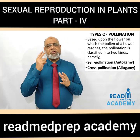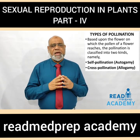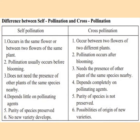Based upon the flower on which the pollen of a flower reaches, pollination is classified into two kinds: self-pollination or autogamy, and cross-pollination or allogamy. Self-pollination occurs in the same flower or between two flowers of the same plant, whereas cross-pollination occurs between two flowers of two different plants. Self-pollination usually occurs before blooming, whereas cross-pollination occurs after blooming. Self-pollination depends little on pollinating agents whereas cross-pollination depends completely on pollinating agents. Purity of species is preserved in self-pollination whereas in cross-pollination it is not. No new variety develops in self-pollination.